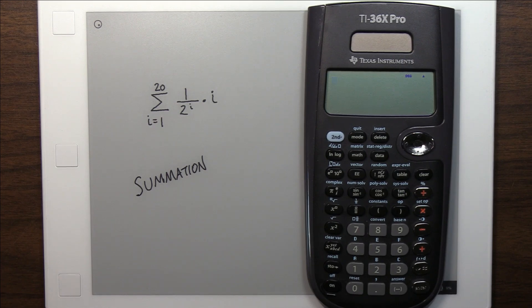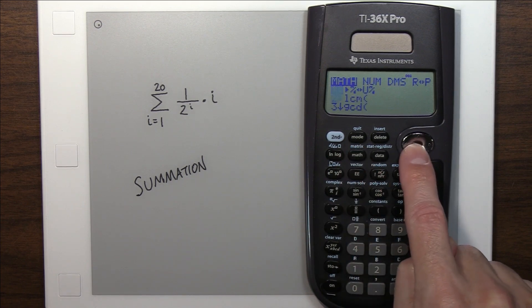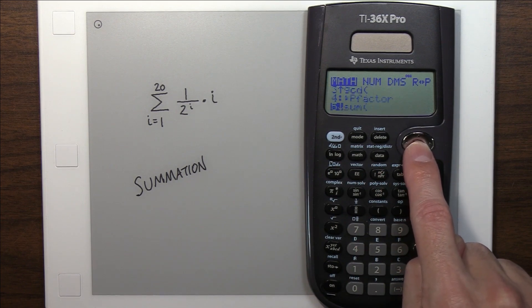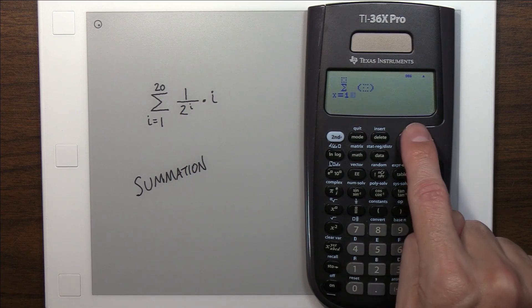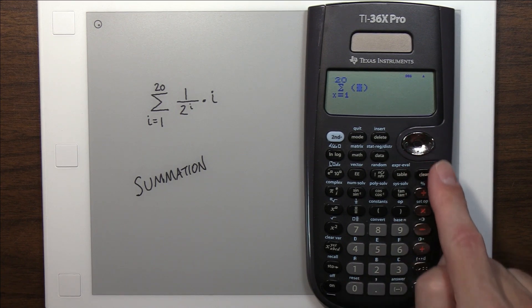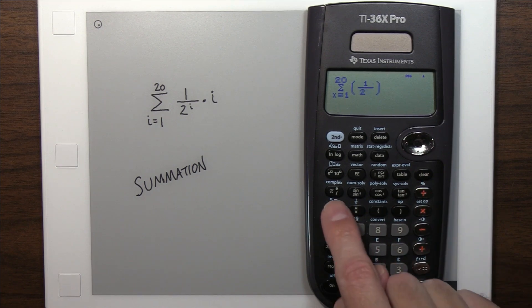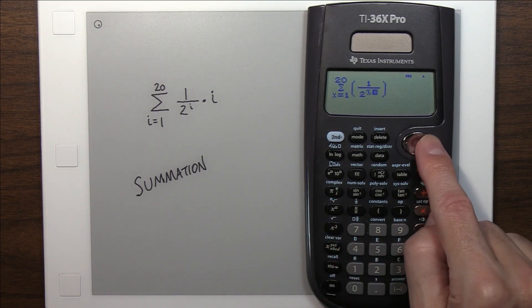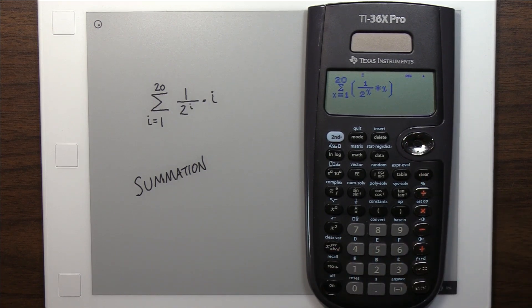Alright, if we want to find a summation, we go and look at the calculator and realize, oh, it's not there. It's kind of hidden underneath the math menu, and go under sum, and it uses x, not i. But we're going to go from 1 to 20, and we're going to sum up 1 over 2 to the x, come over here, times x. Does a little chugging, and gives us our answer, which is suspiciously close to 2, which is the exact answer.